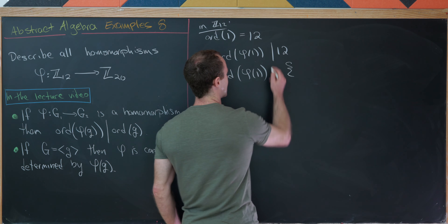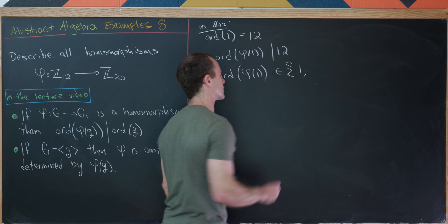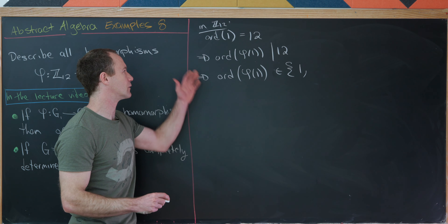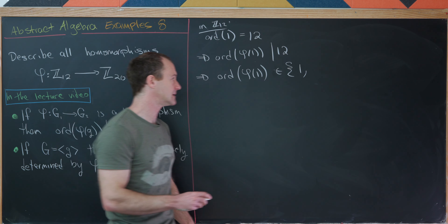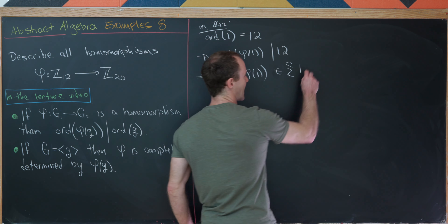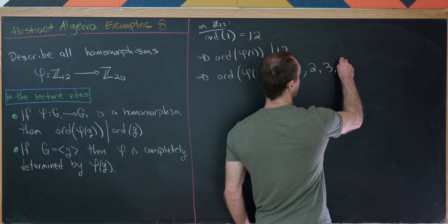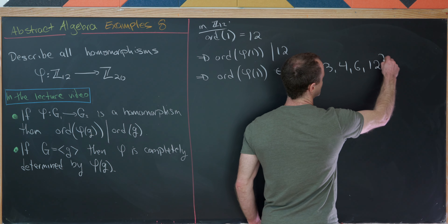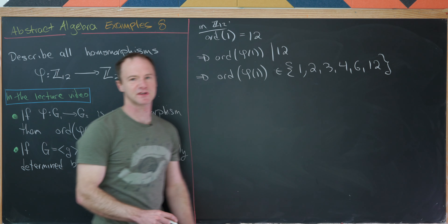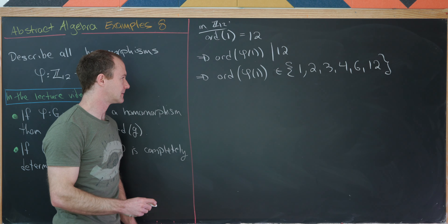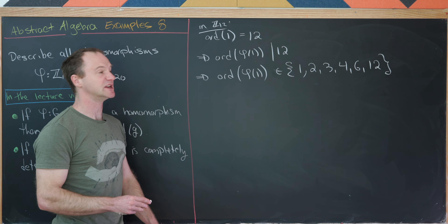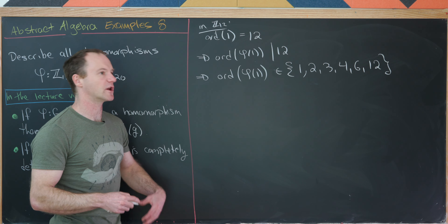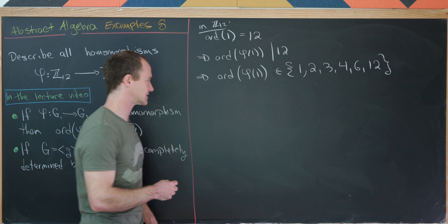We could have that the order of φ(1) is equal to 1, meaning 1 would be mapped to the identity. We could have that the order is 2, 3, 4, 6, or 12. We're going to go through each of these one at a time and see what homomorphisms we get.